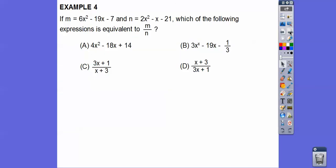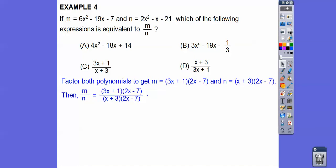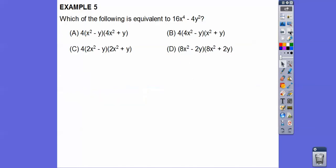All right. So if m equals 6x squared minus 19x minus 7 and n equals 2x squared minus x minus 21, which is the following expression is equivalent to m over n? More factoring, you guys. So when we factor that and put them on top of each other, the 2x minus 7s cancel and we get choice c.